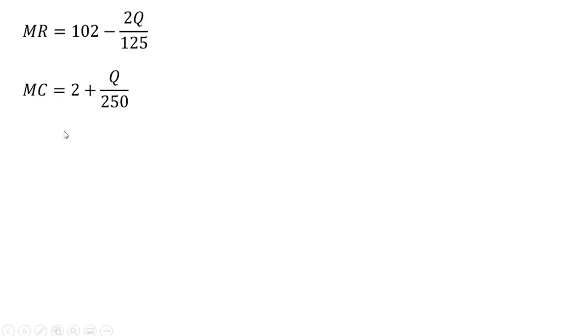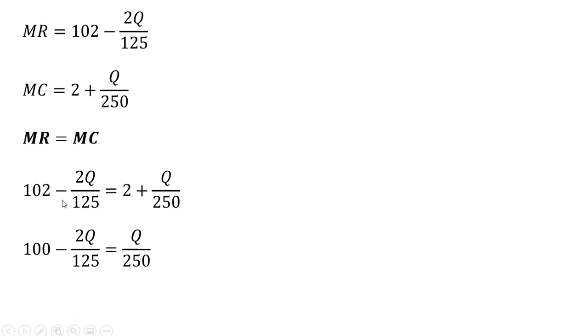So marginal revenue and marginal cost that we found. Now setting both of those equations equal to one another, and we're going to solve for Q. So subtracting 2 from both sides, and then adding this 2Q divided by 125 to both sides. Now simplifying the right-hand side.